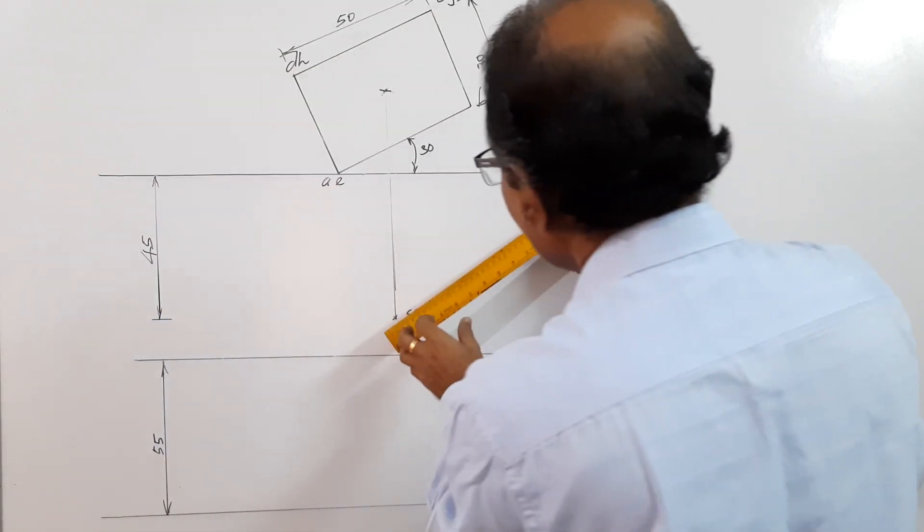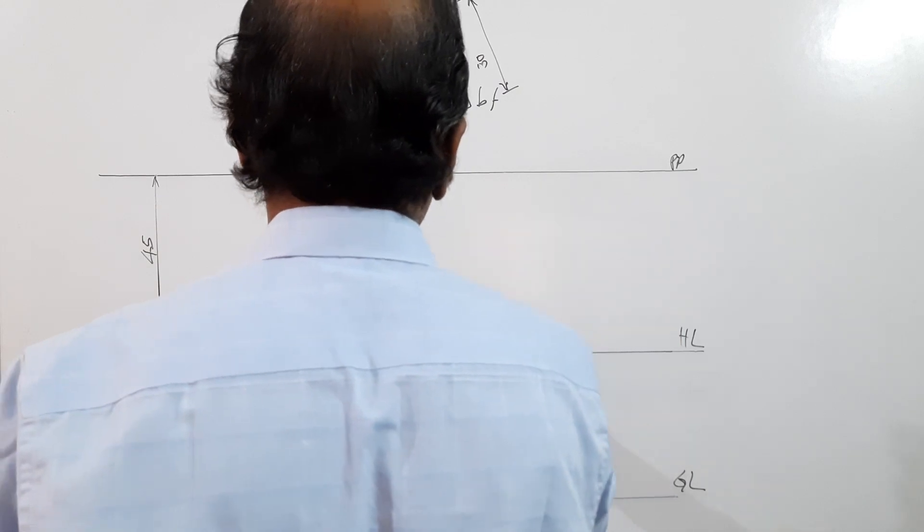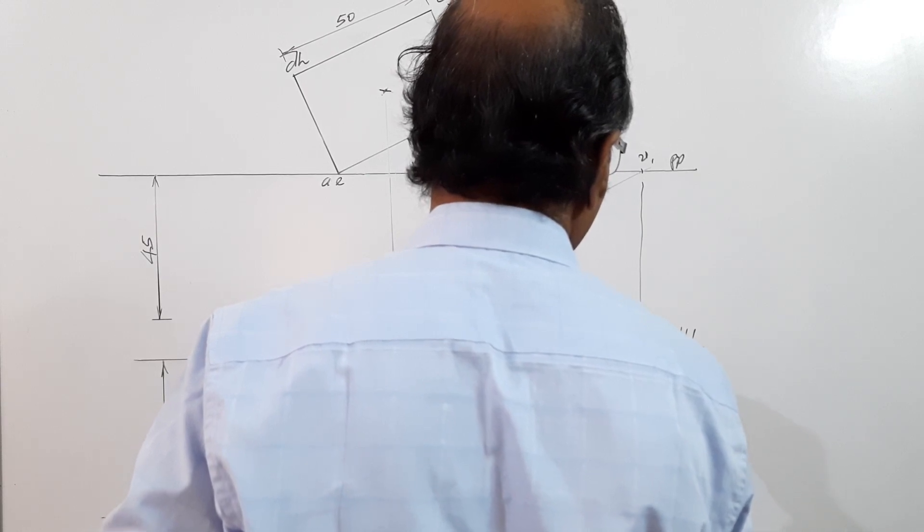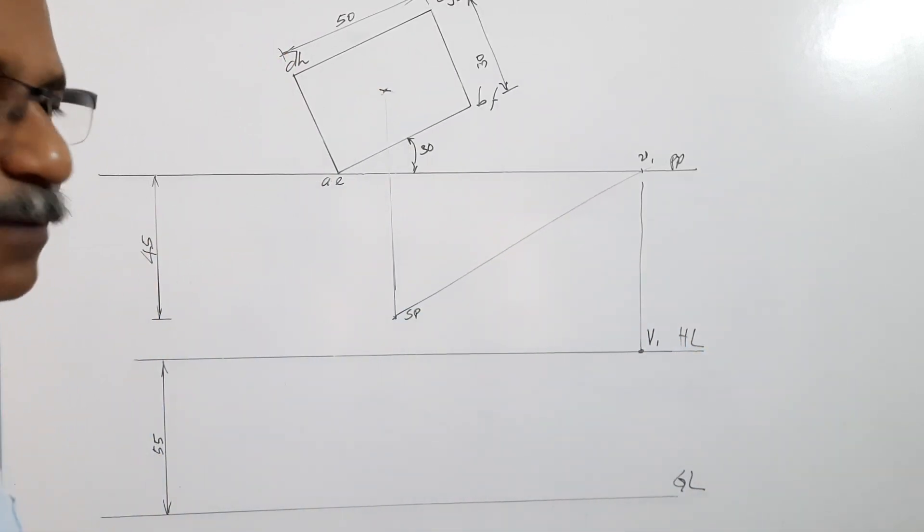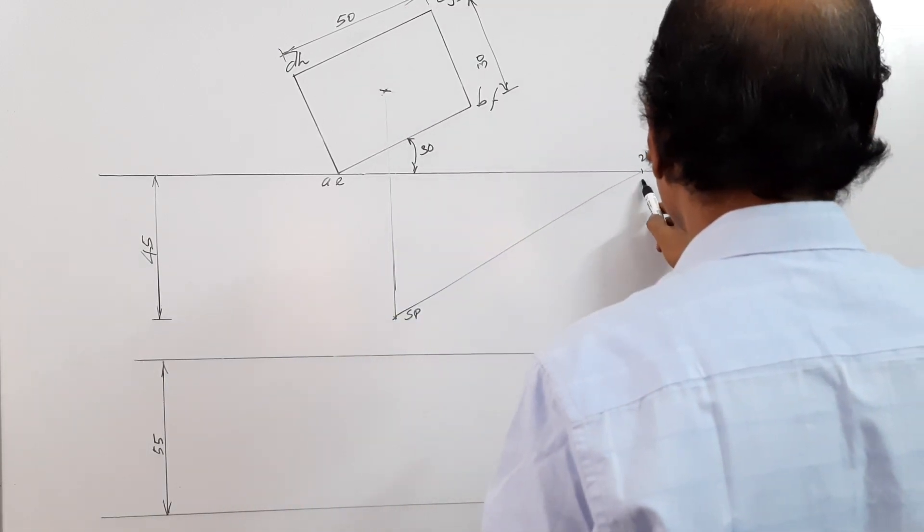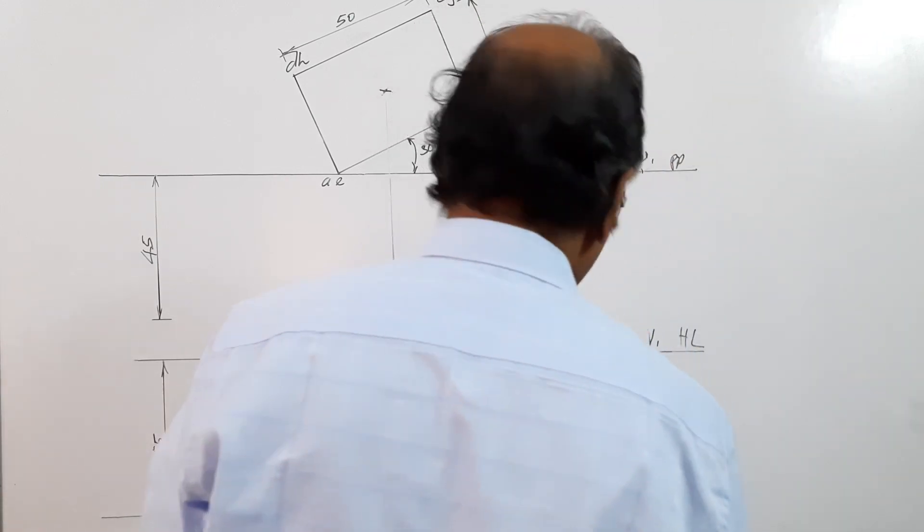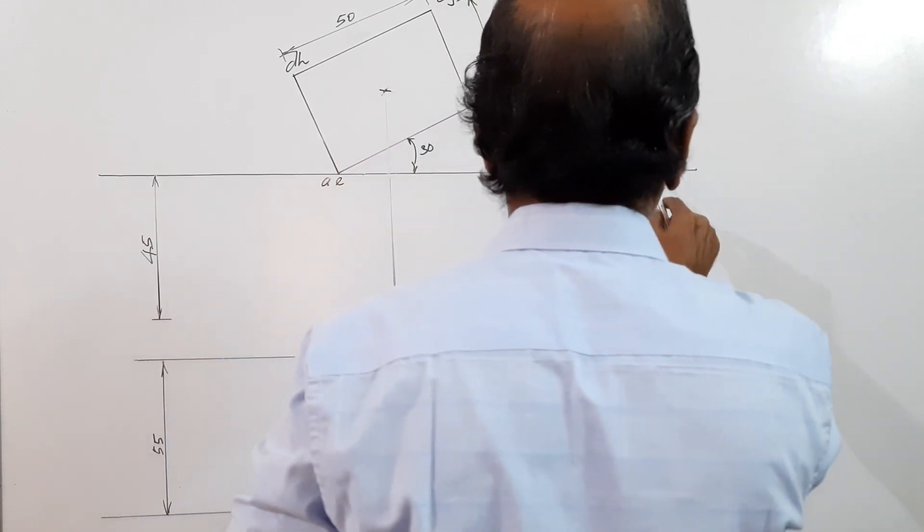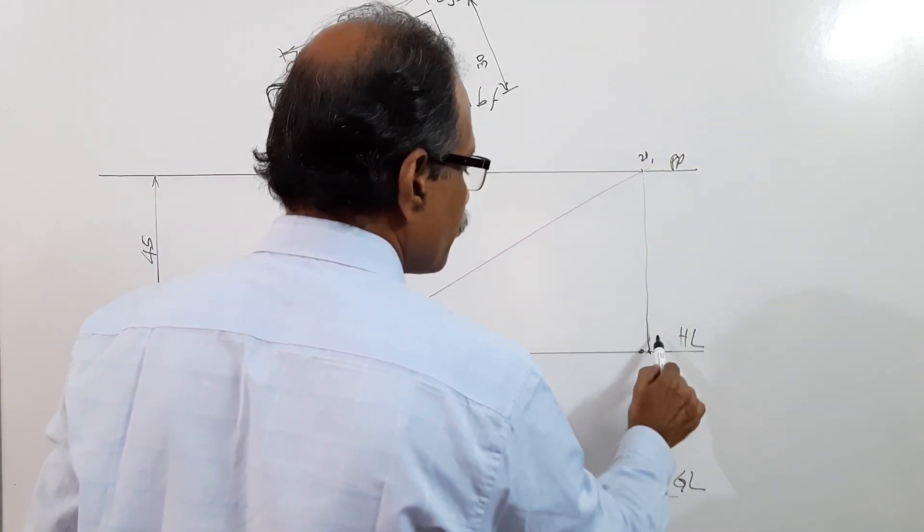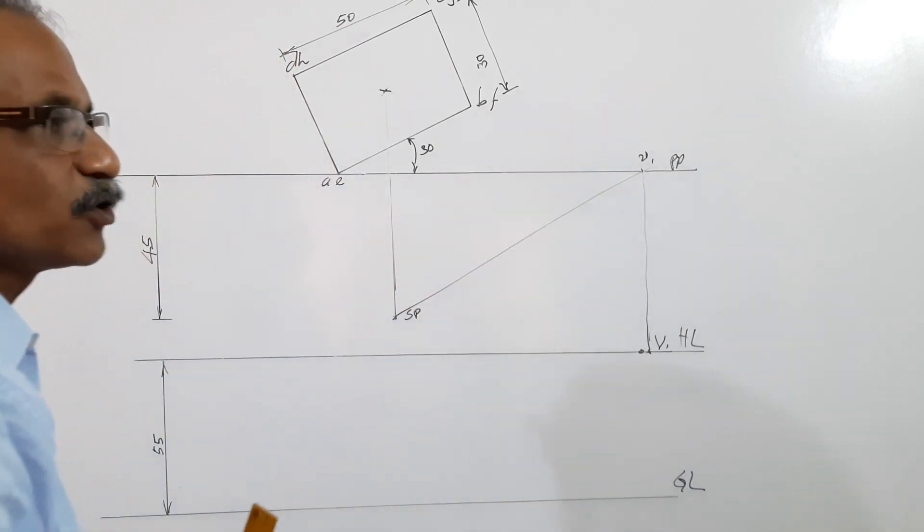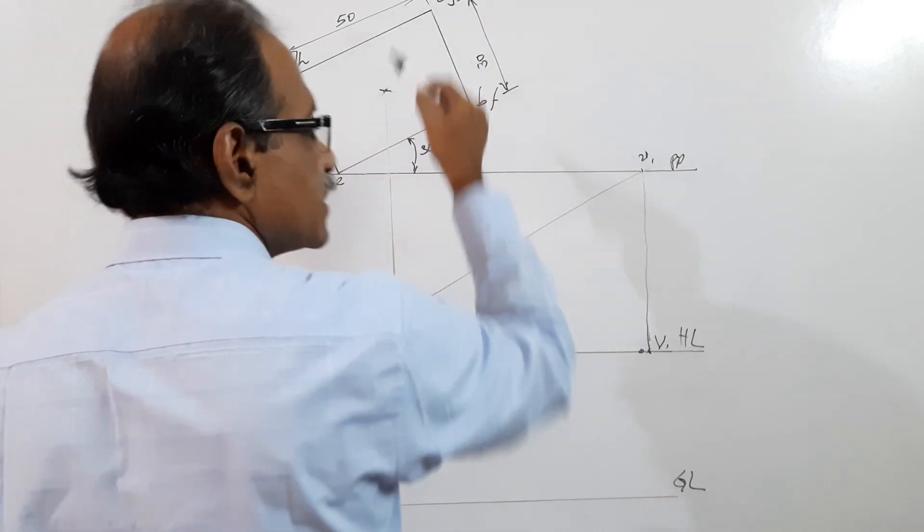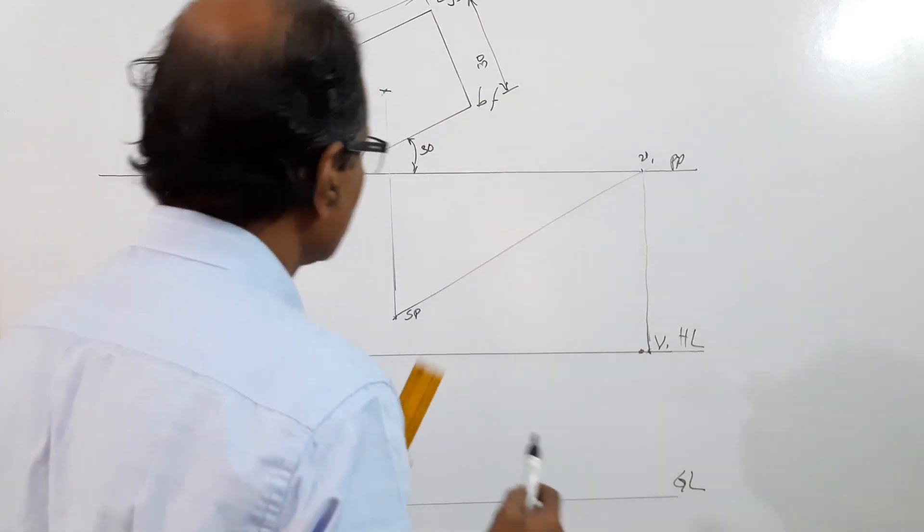Now I have to locate the vanishing point of side AB. For that, I draw a line through SP parallel to AB and cut picture plane at V1. Drop it down to HL. I get capital V1. What is capital V1? Capital V1 is the vanishing point of AB and all lines parallel to AB. What are the other lines parallel to AB? One is F, one is CD, and the other is GH.